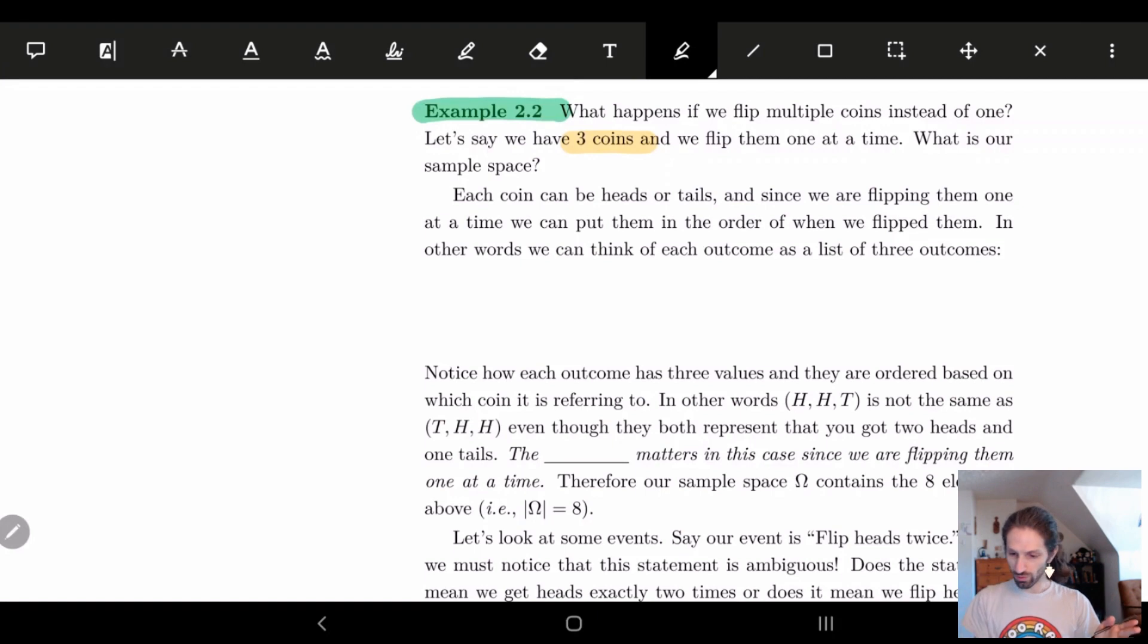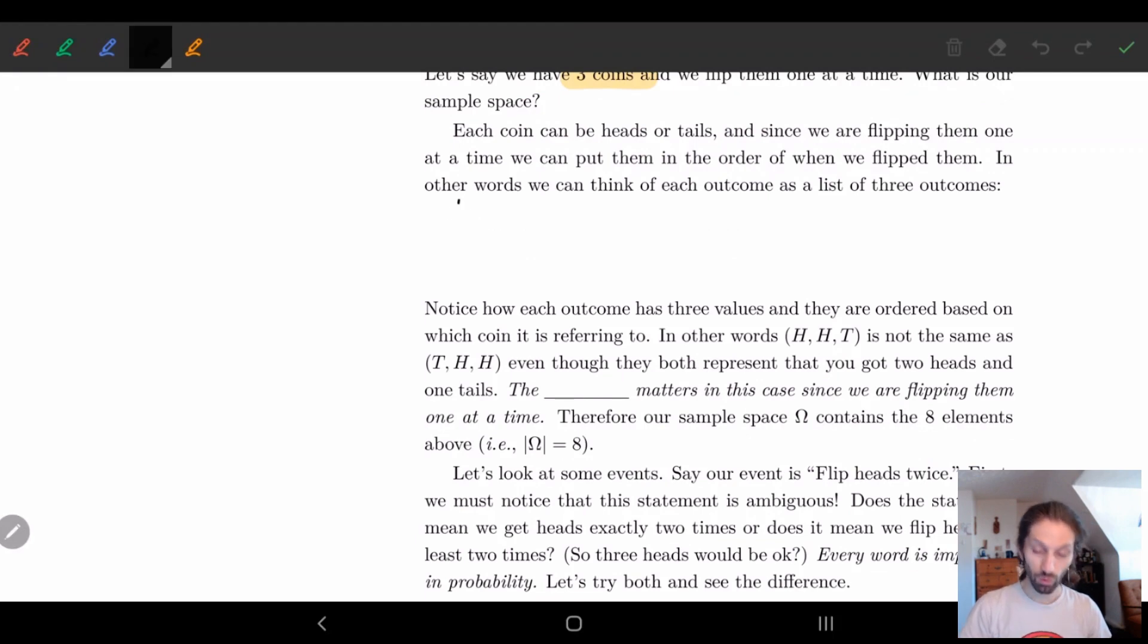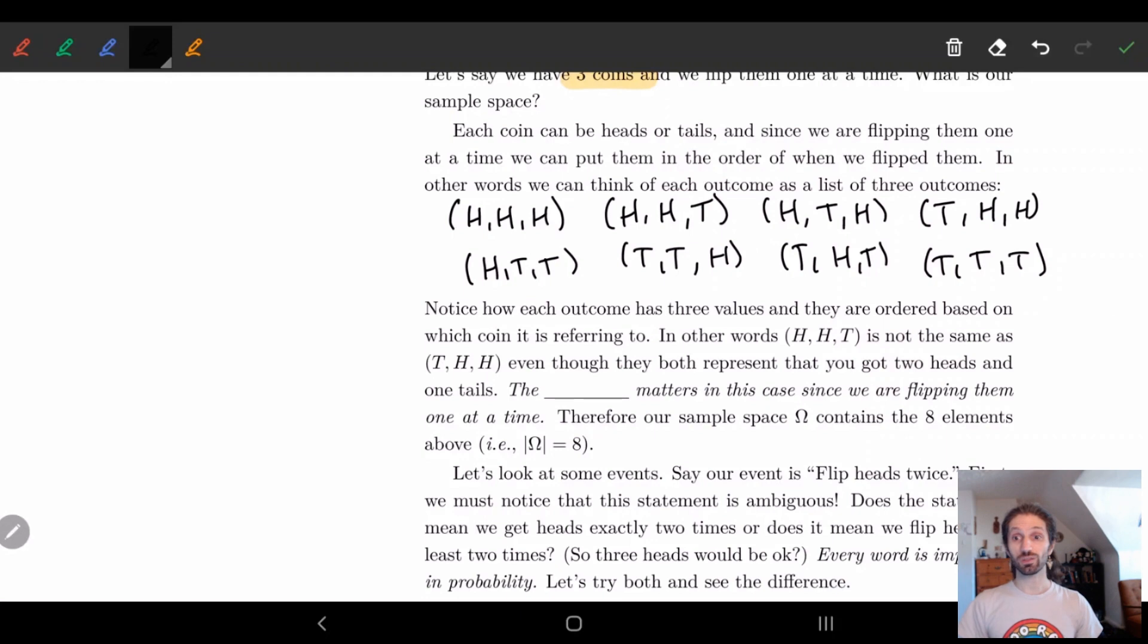If you think about it, I have three coins and each one is either going to be heads or tails. I need to write down not only that each one is heads or tails but also the order, because the first one is different than the third one. I'm basically going to make ordered lists. Here I can have them all be heads, I can have the last one be tails, the second one be tails, the first one be tails. Also, the last two be tails, the first two be tails, the first and last one be tails, and then all be tails. That should be all the different options.